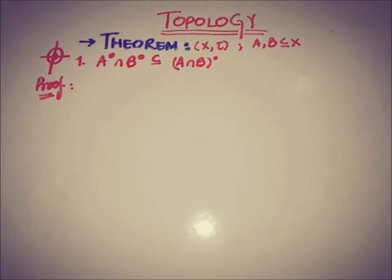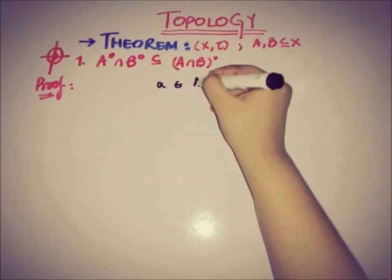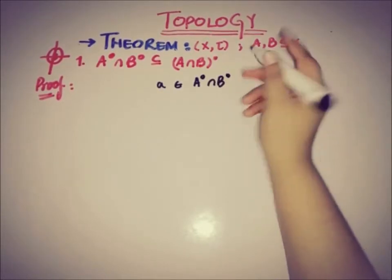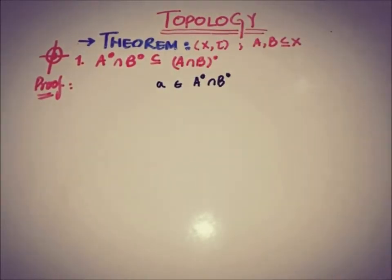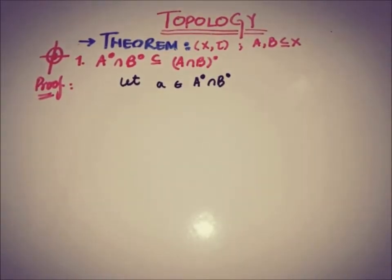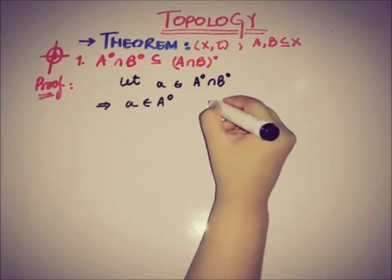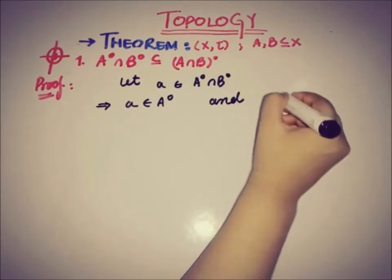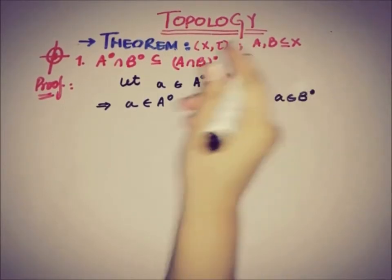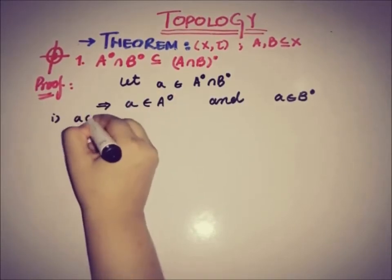Let's start proving the first part: Int(A) ∩ Int(B) is a subset of Int(A ∩ B). We take a point 'a' from Int(A) ∩ Int(B). Because 'a' is part of this intersection, 'a' belongs to Int(A) and 'a' also belongs to Int(B).